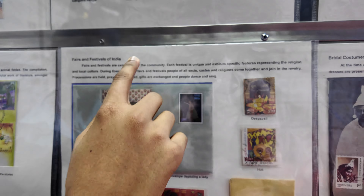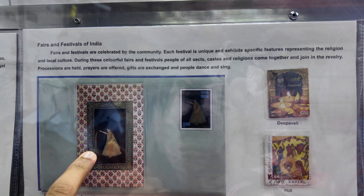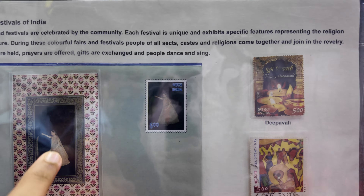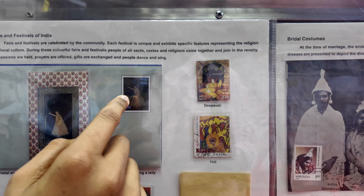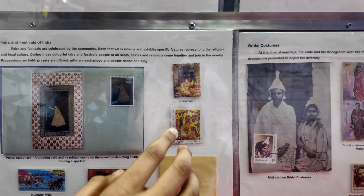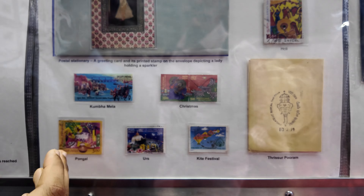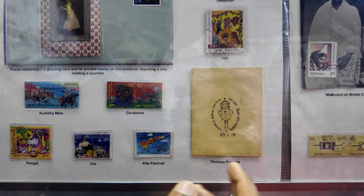These are the fairs and festivals of India. This is a greeting card — inside this post cover, depicting a girl playing with sparklers during Deepavali. This stamp is also here, and this is the Deepavali theme, also depicting Deepavali. These are the traditional Melas — Christmas, Pongal, Urs, Kite Festival, etc.